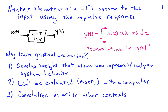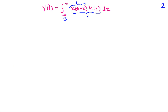Convolution occurs in other contexts, such as when we do windowing and take a discrete Fourier transform, and it's useful to have the intuition as to how that convolution is going to affect what we look at in the frequency domain. So our procedure for evaluating this integral is going to consist of three steps.